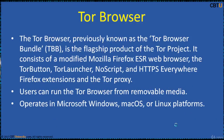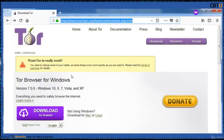The TOR browser, previously known as TBB (TOR Browser Bundle), is the flagship product of the TOR project. It consists of a modified Mozilla Firefox ESR web browser, the TOR button, TOR Launcher, NoScript, and HTTPS Everywhere Firefox extensions, and the TOR Proxy. Users can run the TOR browser from removable media. It can operate under Microsoft Windows, Mac OS, or Linux. The TOR browser starts TOR background processes and routes traffic through the TOR network.